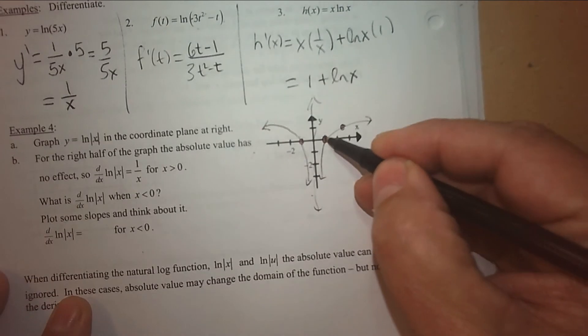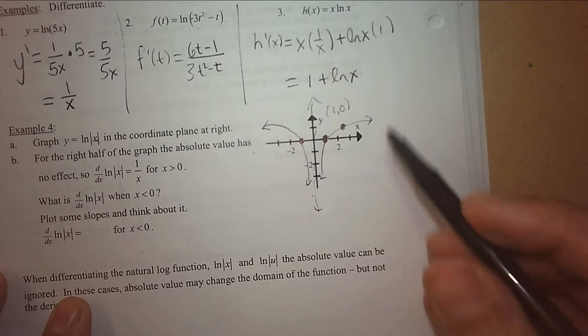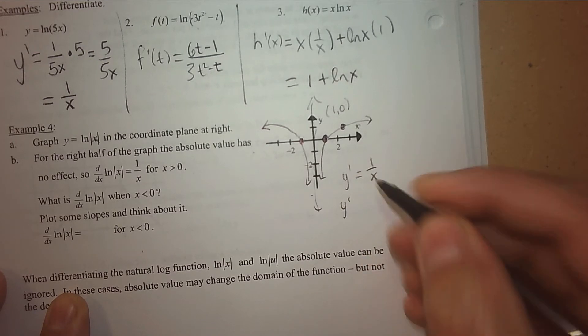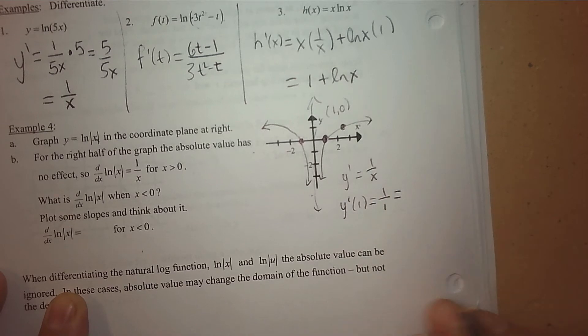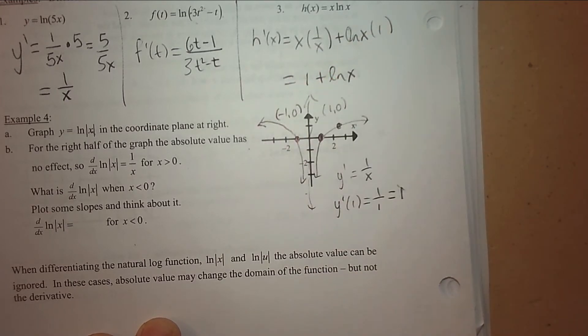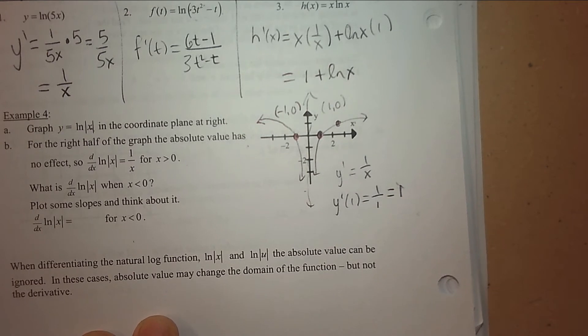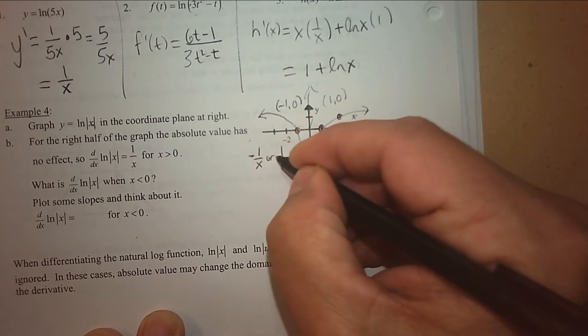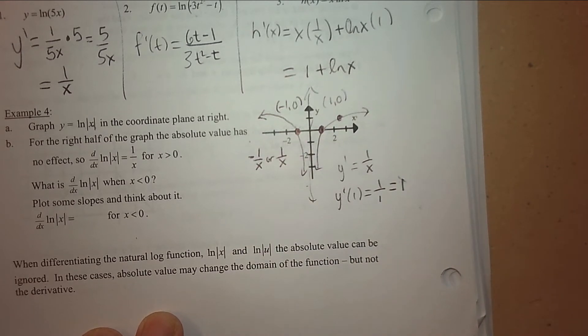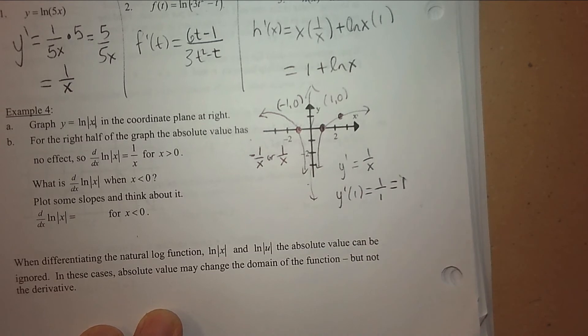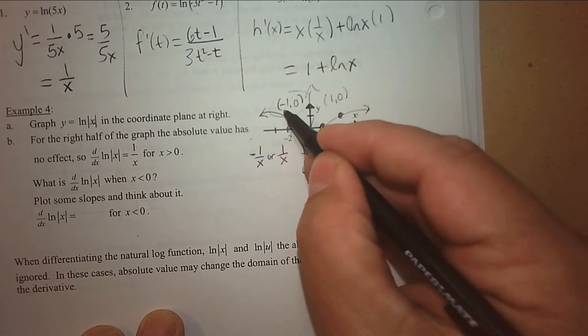That absolute value makes all the numbers other than 0 valid. So on the other side, what would it be? It says for the right half of the graph, the absolute value really has no effect because the positive number just stays positive. So when x ≥ 0, the answer would just be 1 over x. But what happens on the left side? Plot some points and then think about what the derivative would be.